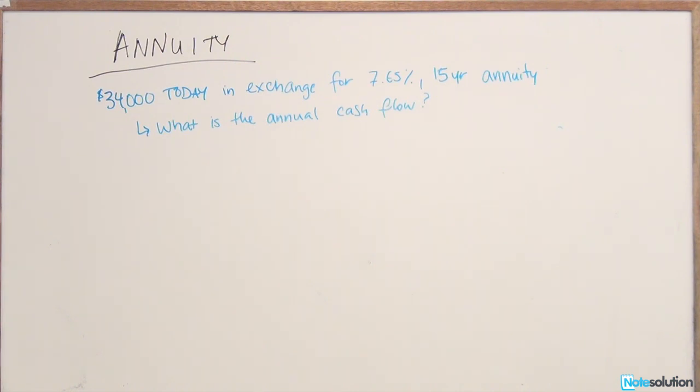We know that you are putting up $34,000 today in exchange for a 15-year annuity that pays 7.65%. Given that information, what is the annual cash flow you're going to receive from this annuity?